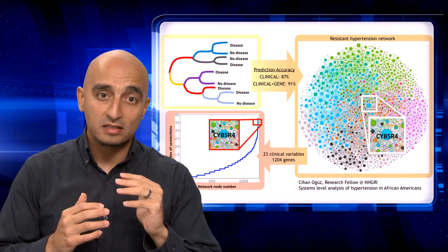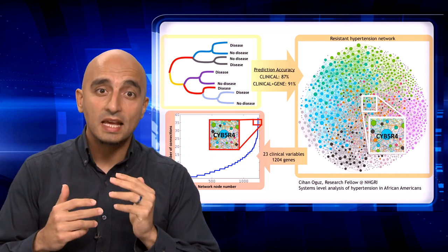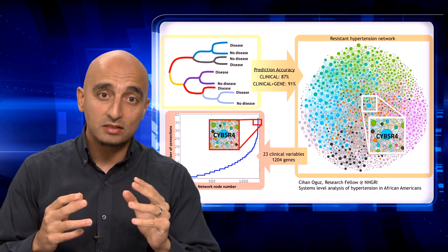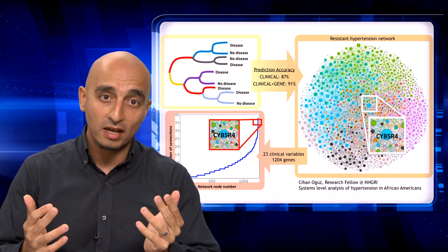African Americans are disproportionately affected by resistant hypertension, as well as its early onset compared to other ethnicities in the United States.